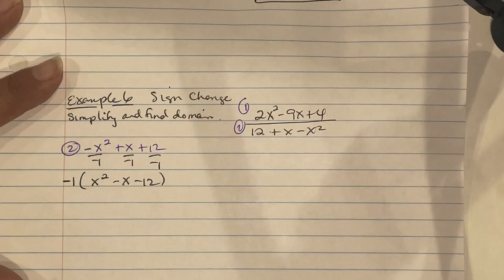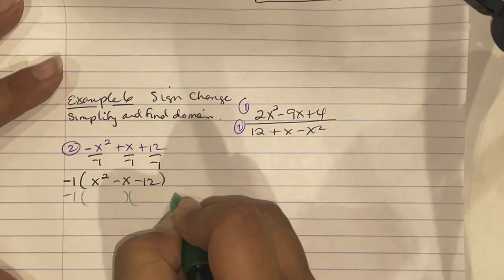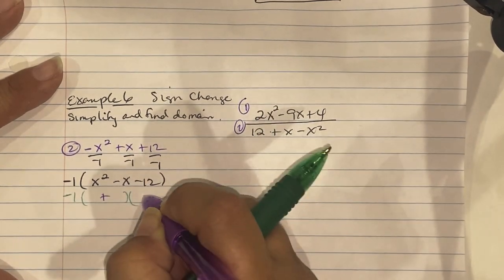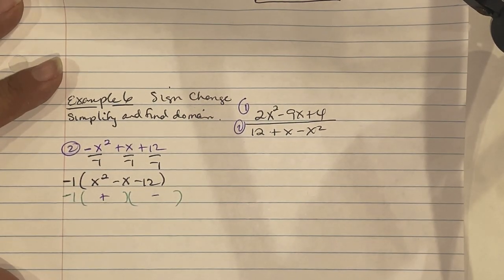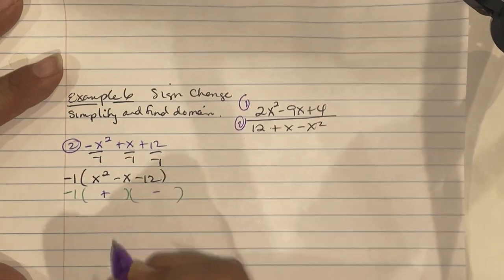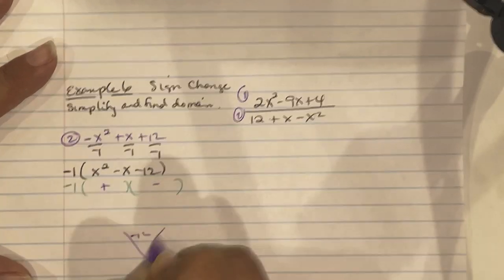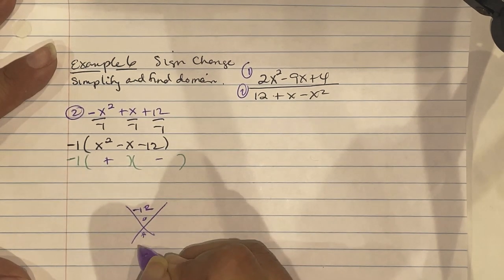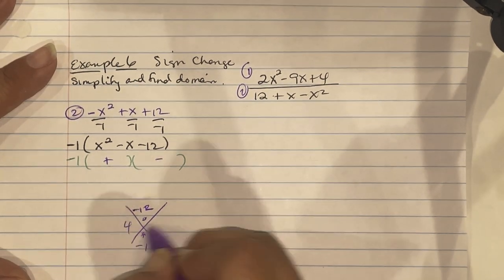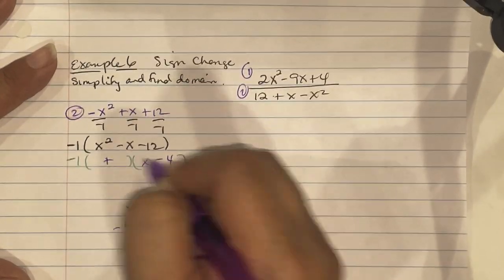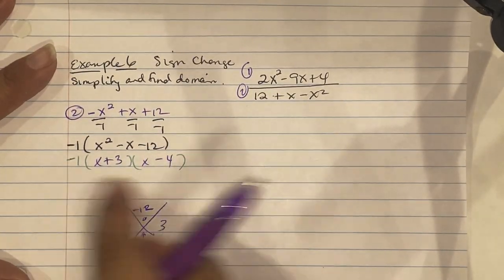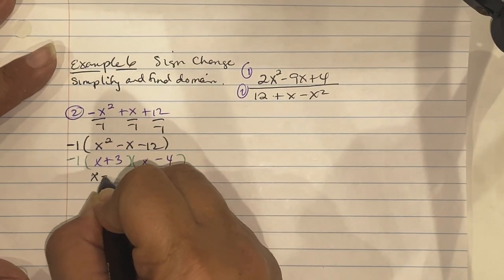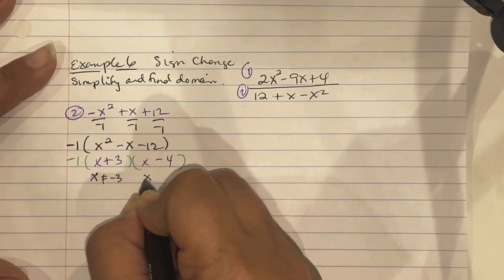Factor out negative 1 from the denominator to get negative 1 times x squared minus x minus 12. This is a negative-negative situation, so plus-minus inside. Numbers that multiply to negative 12 and add to negative 1: negative 4 and positive 3, giving x minus 4 times x plus 3. So x cannot equal negative 3 and x cannot equal positive 4.